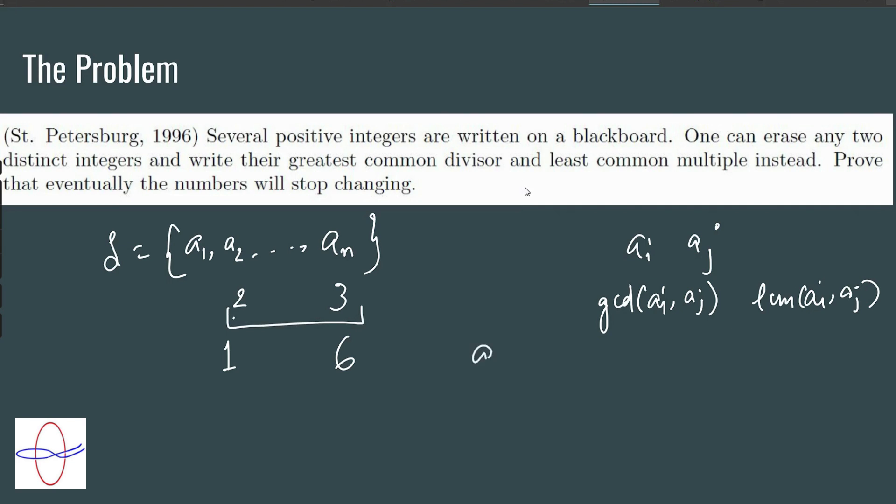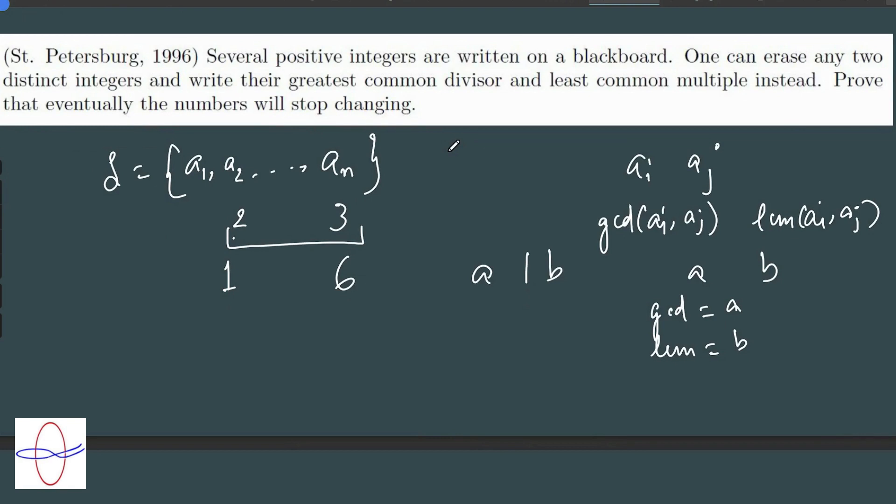Say it happens that A divides B. Say we take A and B such that A is a divisor of B. Obviously in that case, the GCD is A and the LCM is B. Think about why this should be true. In fact, this is the only way we can start with A and B, replace them by the GCD and LCM and actually get A and B back.